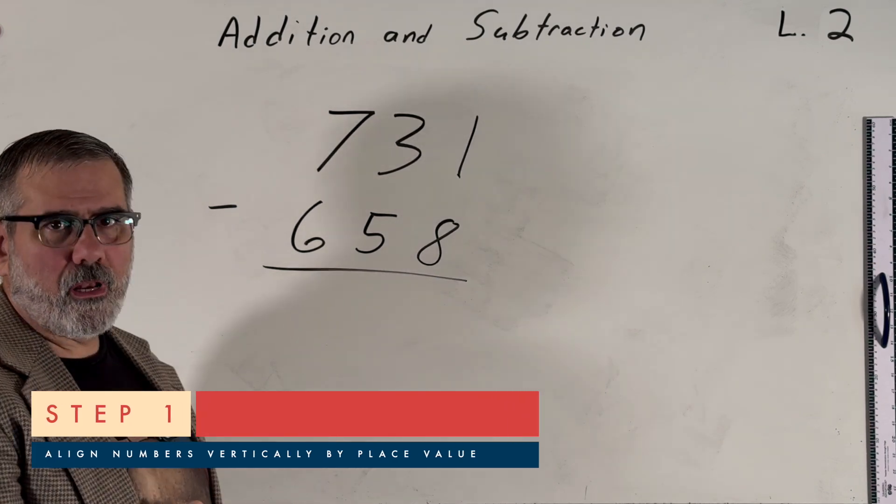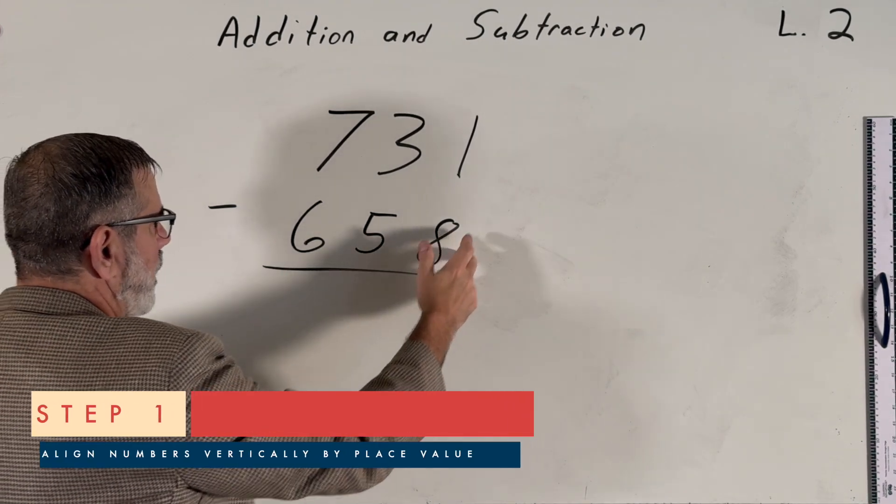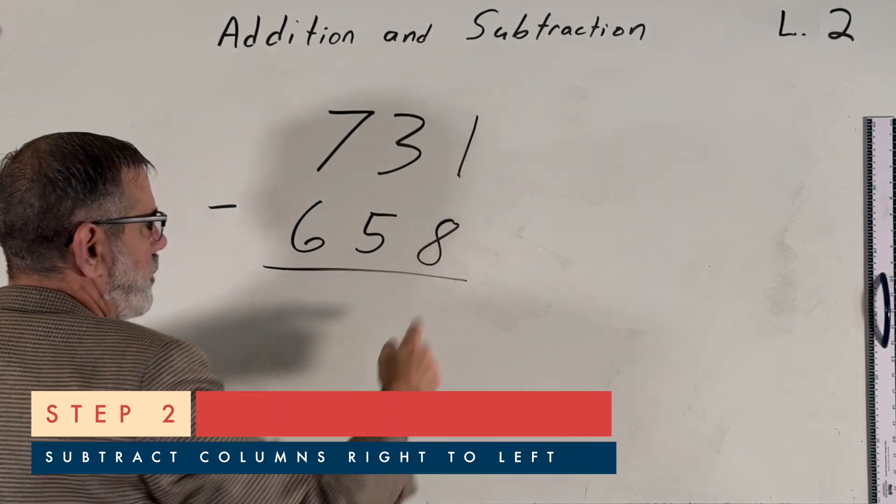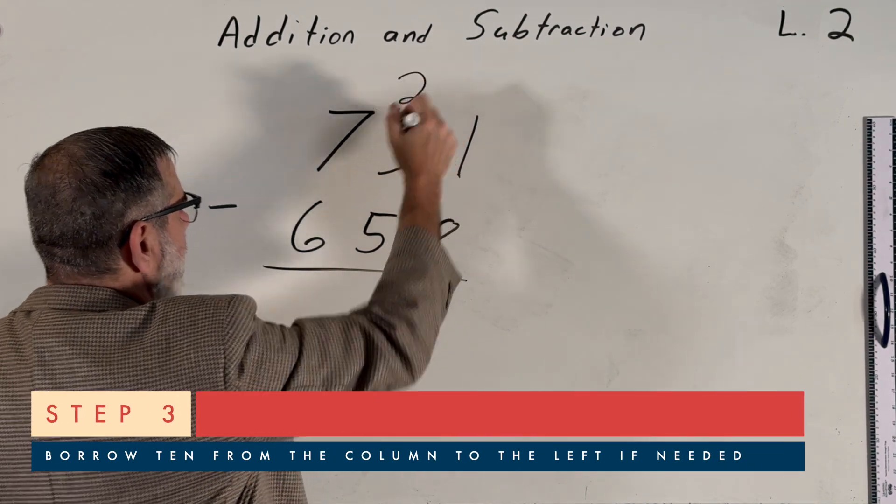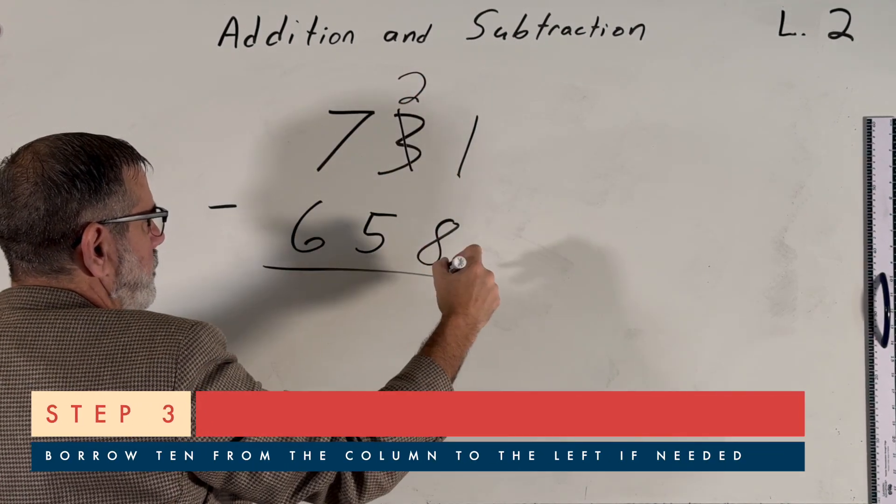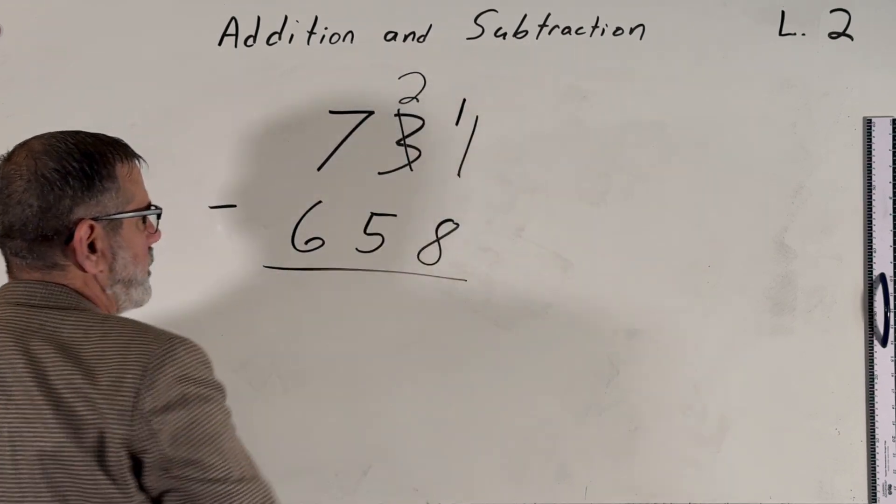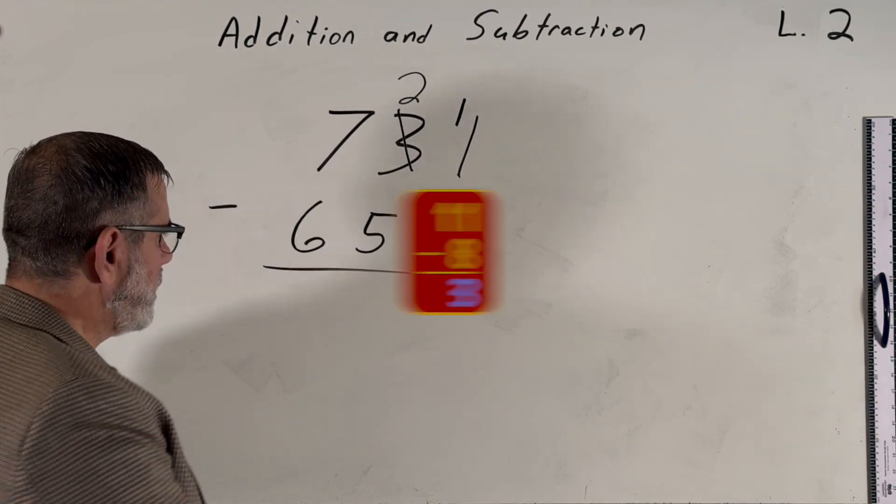Okay. Since we already have things laid out vertically and aligned by place value, we'll start in the rightmost column and we'll look at 1 minus 8. We recognize we can't do that, so we're going to borrow 10 ones from our neighbor, not forgetting to strike out the 3 and replace it with 1 less than 3, which is 2. And then add our 10 ones here. So now we have 11 minus 8, which is 3.